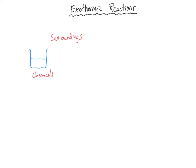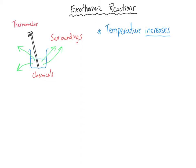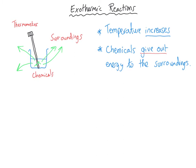We're going to look at two different types of chemical reactions that are opposites of each other. The first one is called an exothermic reaction. In an exothermic reaction, the chemicals react together and transfer energy out to the surroundings. We can tell this is happening because a thermometer placed in the beaker where the chemicals are reacting would show the temperature going up, because the chemicals are giving out energy to their surroundings — and the thermometer, being part of the surroundings, gains that energy and registers a temperature increase.